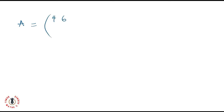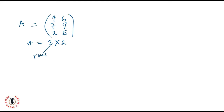Let's get started. If I have a matrix A equals 4, 6, 7, 9, 2, and 5, you can find the transpose of this matrix. If you look at this matrix from our previous lessons, I hope you should be able to tell me the type of matrix it is. This matrix is a 3 by 2 matrix — it has 3 rows and 2 columns. Here are my rows: row 1, row 2, and row 3. And here are my columns: the first column and the second column.